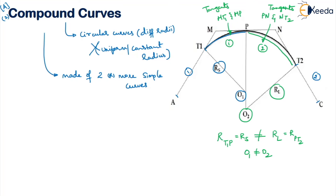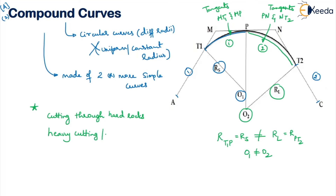Compound curves are suitable in topographic areas where you need to avoid cutting through hard rocks — when a normal simple curve would require such cutting, you can use compound curves instead. They are also suitable where heavy cutting or filling is involved — by changing the radius, you can provide the curve in that particular area while avoiding excessive earthwork.